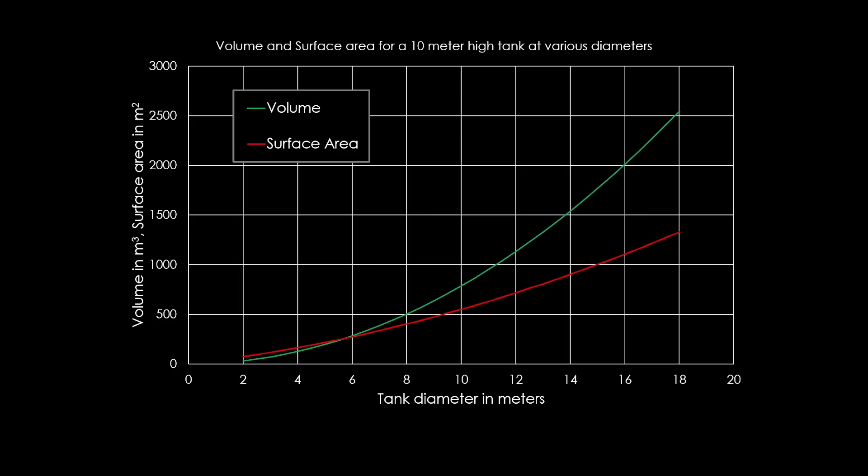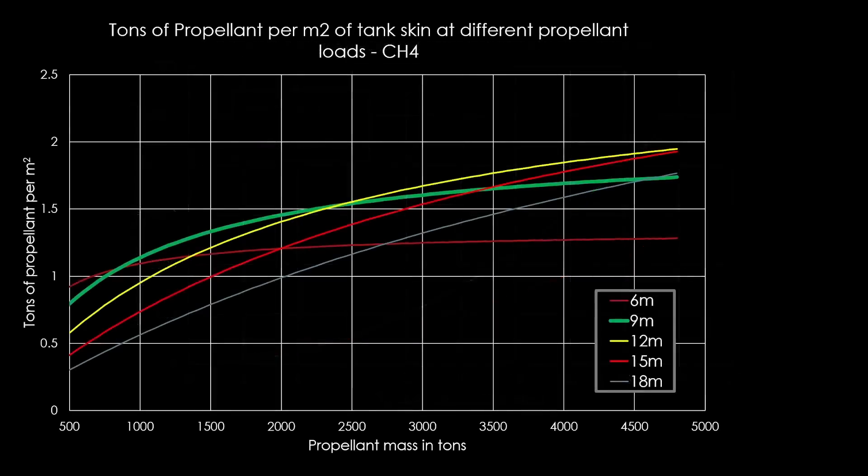We know that the optimal diameter depends on how much propellant we want to carry, so we want a specific graph that is specific to Starship. This is a graph that shows us how many tons we can put into a tank per square meter of tank skin at different propellant amounts for a rocket burning liquid methane, and this is aimed at Starship, not at super heavy, because this measure is far more important for Starship.